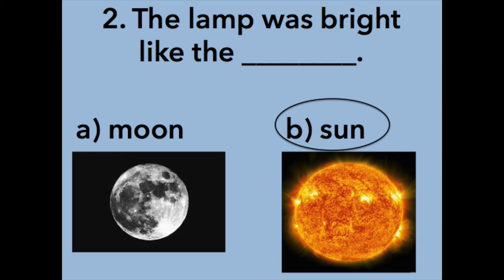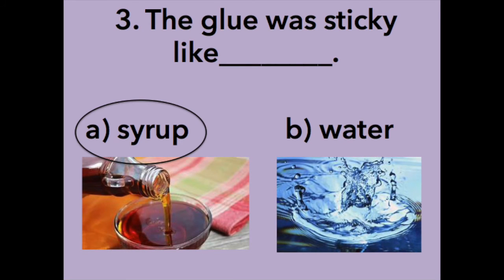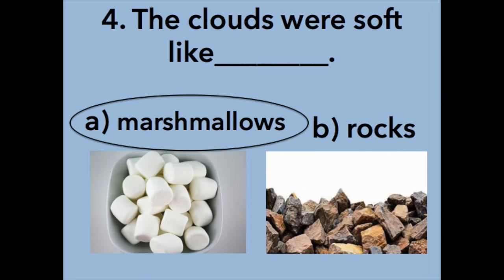Even though the moon can be bright, the sun is much brighter. The glue was sticky like syrup or water. Syrup is correct. The clouds were soft like marshmallows or rocks. Marshmallows is correct.